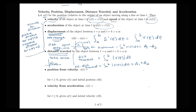To distinguish displacement from distance traveled: imagine you start at home, go for a walk around your neighborhood, and return home. Your displacement would be zero because you started and ended at the same place, but the distance you actually covered during that walk would be non-zero. That's how we think about the difference between those two ideas.